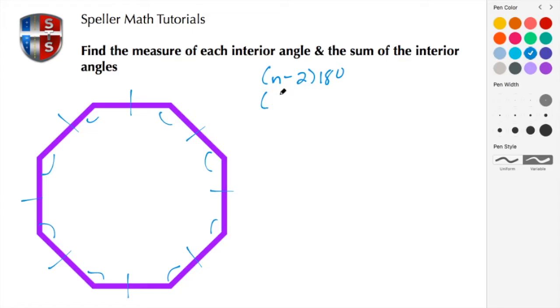So in this case since it's an octagon n is 8 minus 2 times 180. Well 8 minus 2 is 6 and we're multiplying 6 times 180 and 6 times 180 turns out to be 1080 degrees. So that there is the sum of the interior angles.